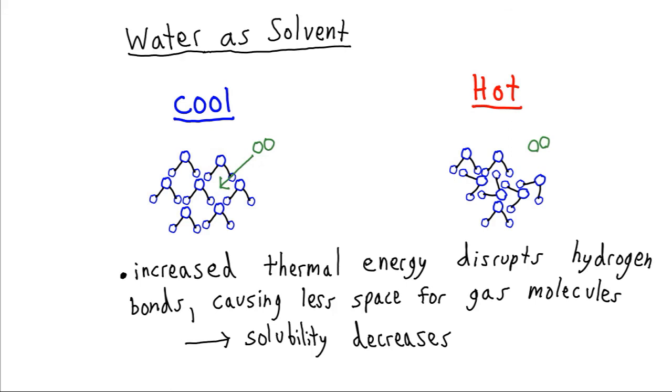Once we start heating the water, that causes some disorganization. Now we no longer have those spaces created by the structure. So as we increase the temperature and we disrupt those hydrogen bonds, then we remove the access that the gas has. And if we want to insert the gas, then we're going to have to supply the energy to pull all these water molecules apart and make room for it. And so what that means is that as we heat water, the solubility is going to do the opposite of what happens for the organic substances. Solubility is going to decrease for the gases.